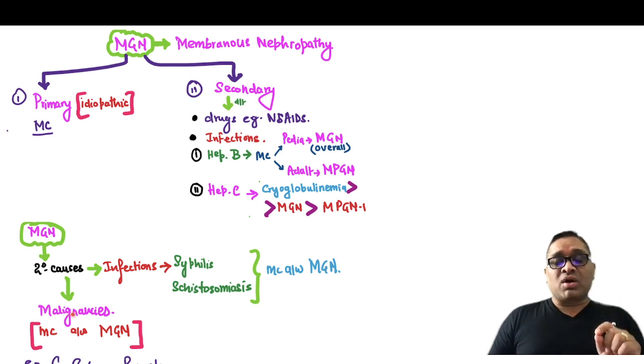During malignancies, you have to remember it is solid cancer like cancer colon and breast. So malignancies are also most commonly associated with Membranous glomerulonephropathy.